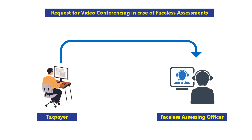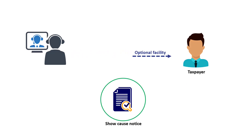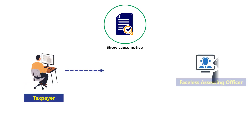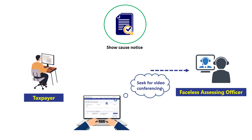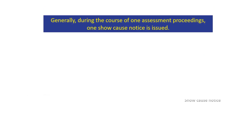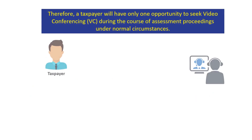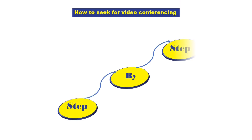Video conferencing is an optional facility provided to taxpayers in cases where a show cause notice is issued. Once a show cause notice is issued, the taxpayer may request video conferencing within the compliance period through the 'Seek Video Conferencing' button under the e-Proceedings tab on the e-filing portal. Generally, one show cause notice is issued per assessment proceeding, so the taxpayer gets just one opportunity to seek video conferencing.